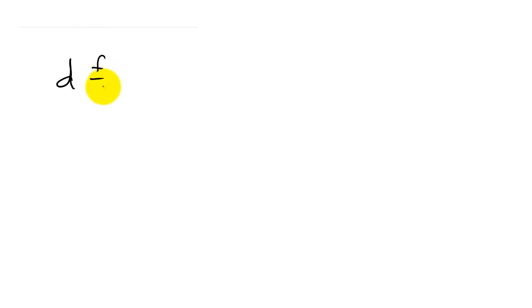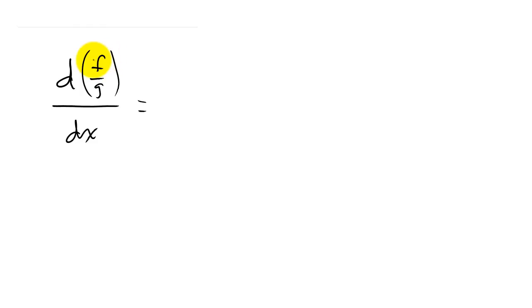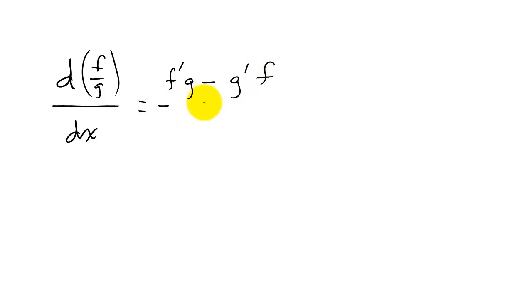Let's take a look at finding the derivative of a function using the quotient rule. The quotient rule is: if we take the derivative of f over g with respect to x, it's the derivative of the numerator f prime times the denominator g, minus the derivative of the denominator g prime times the numerator, all over the denominator squared.